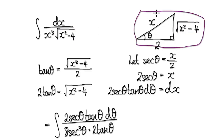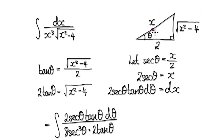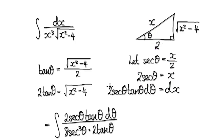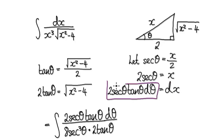Looking at this triangle here, let's use secant. Remember, secant theta equals hypotenuse over adjacent. So x equals 2 secant theta, and dx equals 2 secant theta tan theta d-theta. So now we can put this into the dx later on.